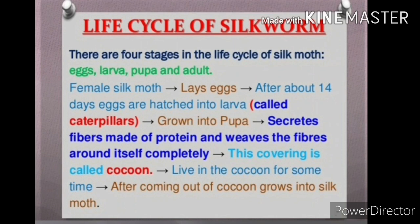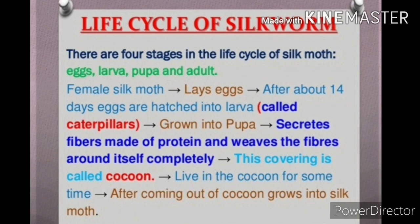A female silk moth lays many eggs. After 14 days, eggs are hatched into larvae, called caterpillars. This caterpillar grows into a pupa and secretes a fiber made up of protein. It weaves the fibers around itself completely — this covering is called a cocoon. It lives in the cocoon for some time, after which it comes out and grows into a silk moth. This is the life cycle of the silkworm.